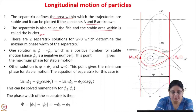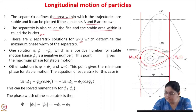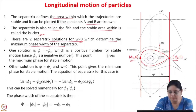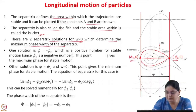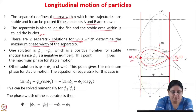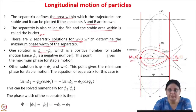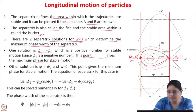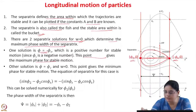There are two separatrix solutions for w equal to 0. For w equal to 0, the separatrix cuts the phi axis at two points: phi equal to minus phi s and phi equal to phi 2. These two solutions determine the maximum phase width of the separatrix. The first solution, phi equal to minus phi s, is a positive number since phi s itself is negative, and this point gives the maximum phase for stable motion — any particle lying beyond this point will execute unstable motion.